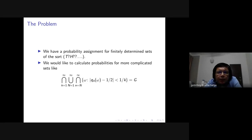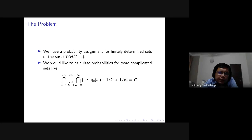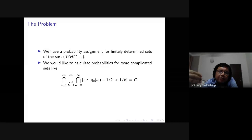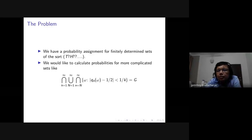The answer is that we are going to extend the probabilities initially assigned to the finitely determined sets. We are asking: can there be a probability assignment to a large enough collection of sets — large enough to include sets like G — which assigns probability 2 to the power of minus n to finitely determined sets specifying at n positions, and satisfies the axioms of probability such as countability, non-negativity, and so on? If we can find such a probability assignment, then we can take the assignment of G as the probability of G.